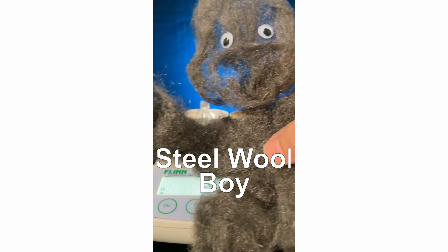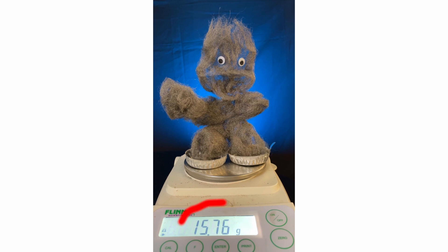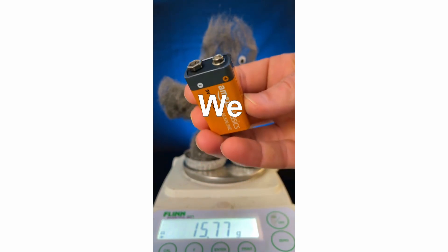Let's take these two dishes and steel wool boy. The dishes are for steel wool boy, one for each foot. Put them on the scale and notice his initial mass is about 15.76 grams. Powered by a 9-volt battery, we can do science.